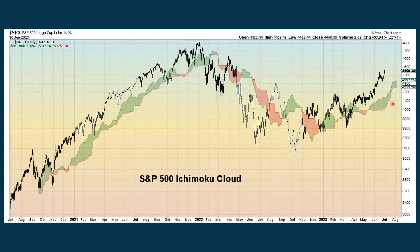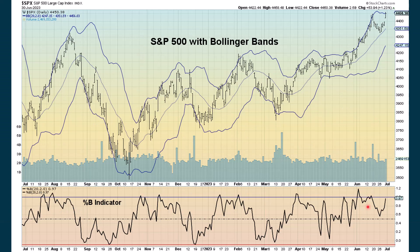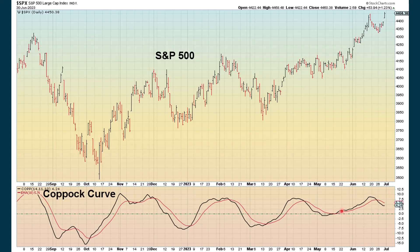We also look at the Ichimoku cloud — which I sometimes call the itchy and scratchy cloud. We're far above it right now. When we're above it and declining, it can act as support; when we're below it and going up, it may act as resistance. The Bollinger bands show we're getting near the upper band right now, but it's not necessarily extreme, as the next chart shows. The percent B indicator tells us how far away we are from the upper or lower band — we're not quite at an extreme positive reading yet. The Coppock curve, which we had been showing for quite a while, has now crossed below the red line, so the signal is gone.